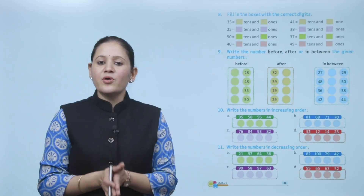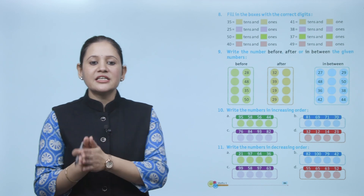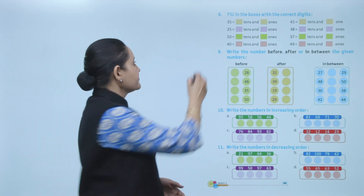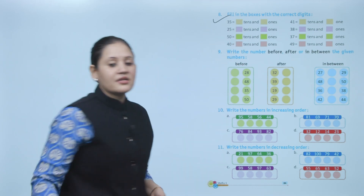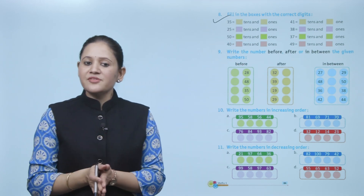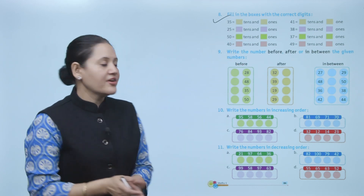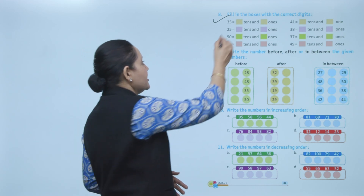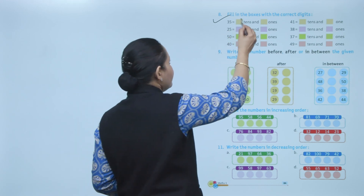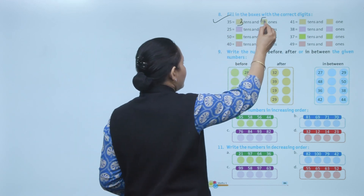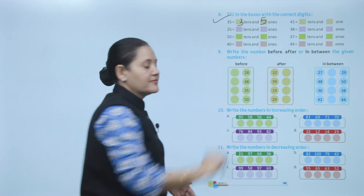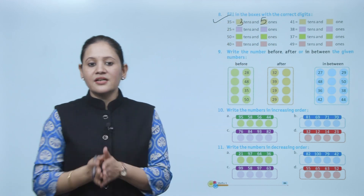Next, fill in the boxes with the correct digit. The number is 35. It has 3 tens and 5 ones.